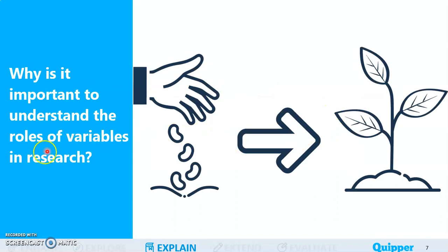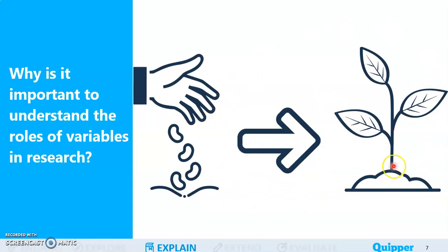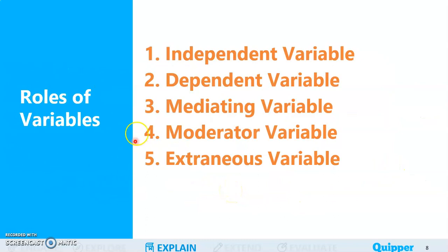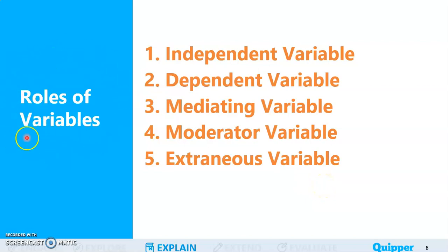So why is it important to understand the roles of variables in research, especially in quantitative research? Of course, it is very important to know what type of variable it is, or what its role is, so that we'd be able to know what to observe in our research — what and where and specifically what the observation is that we're going to make in the conduct of our research study. Based on the roles of variables in research, we have: independent variable, dependent variable, mediating variable, moderating variable, and extraneous variable.